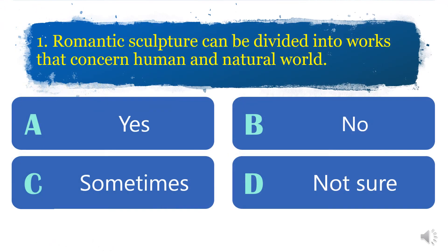Post-test number 1: Romantic Sculpture can be divided into works that concern the human and natural world. A. Yes. B. No. C. Sometimes. D. Not sure. If your answer is A — yes, you are correct.